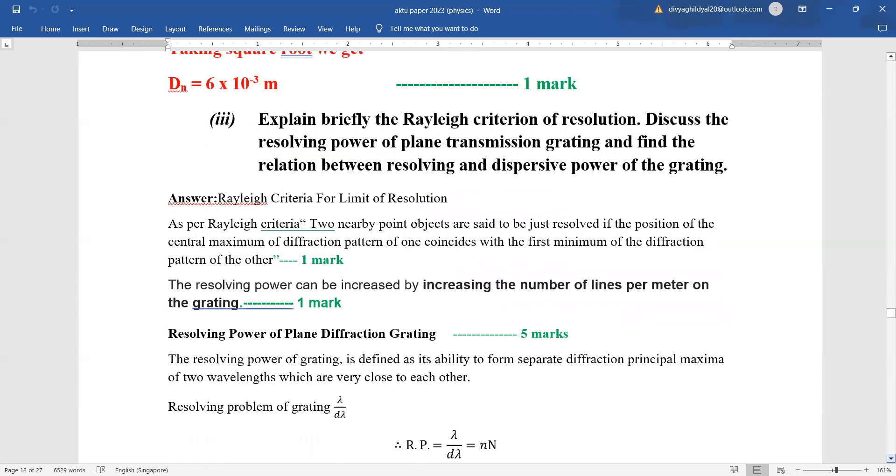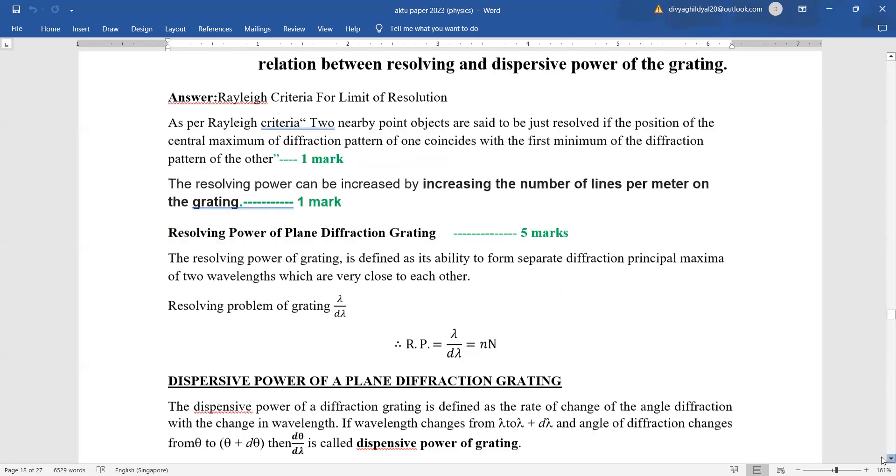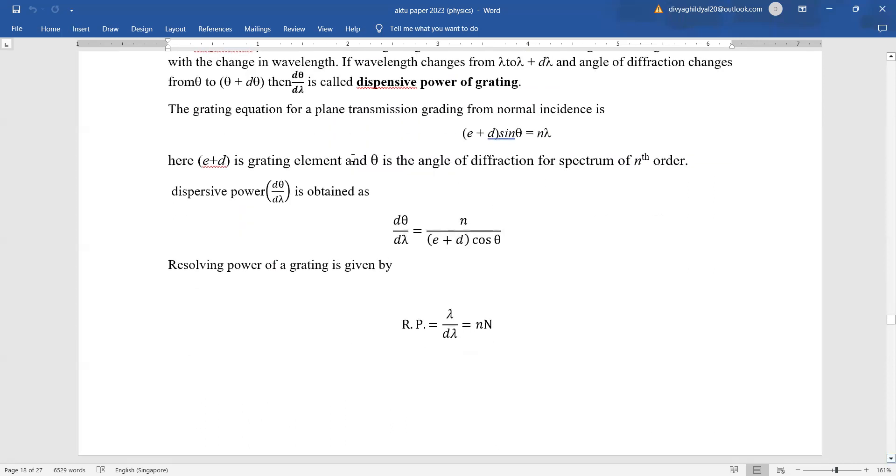Rayleigh criteria of resolution states that two nearby point objects are said to be just resolved if the position of central maximum of diffraction pattern of one coincides with the first minimum of the diffraction pattern of the other. Then they are saying discuss the resolving power of plane transmission grating. You have to discuss about the resolving power that is lambda upon d lambda which equals n into n where n is order of the spectra and capital N is total number of lines on the grating. Then they are asking you to find a relation between the two. This is something new.